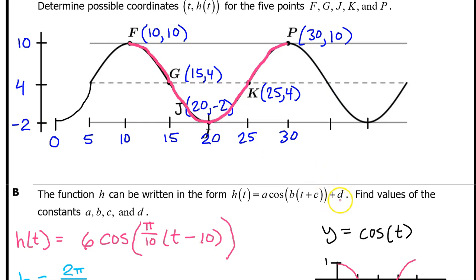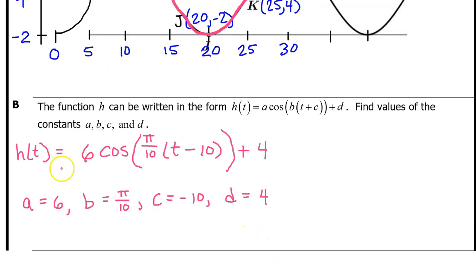Finally, the D value simply corresponds to the midline. So in this case, the D value is 4. On the AP exam, you can either leave your answer as an equation with the values for A, B, C, and D filled in, or you can list them out separately like this.